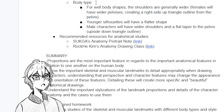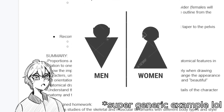The last stylization consideration is body type. For well-built body shapes, shoulders are generally wider, and females will have wider pelvises creating an upright triangle outline from the pelvis. For younger characters, silhouettes will have a flatter shape — shoulders down to the pelvis will be a straighter line. For male characters, they'll generally have wider shoulders tapering down to the pelvis, making an upside-down triangle outline — the classic shape you've probably seen in basic how-to-draw male and female character guides.